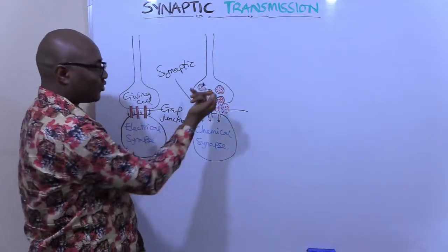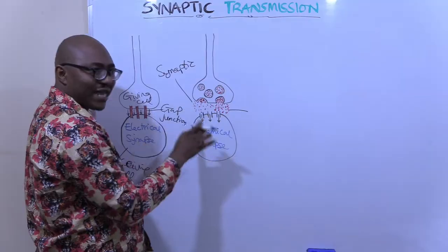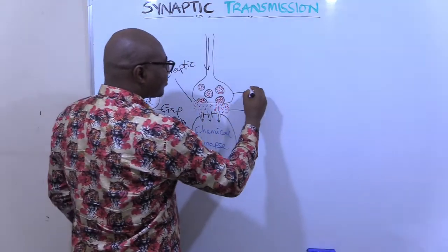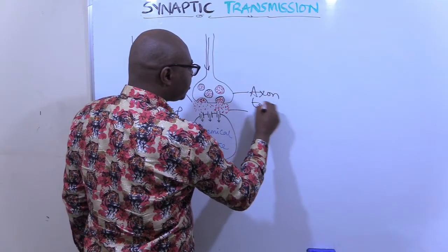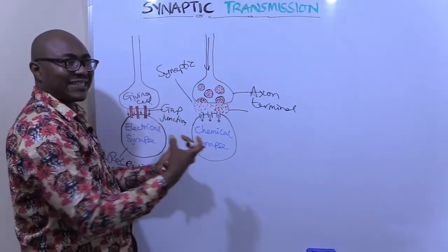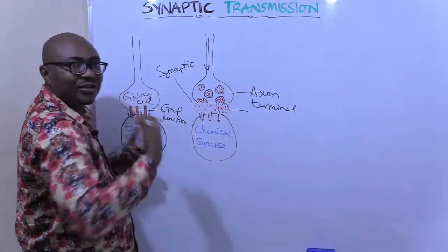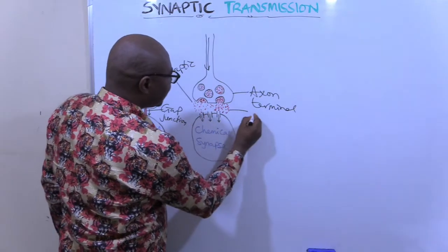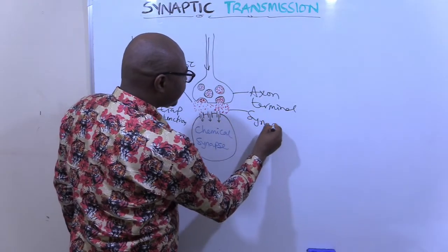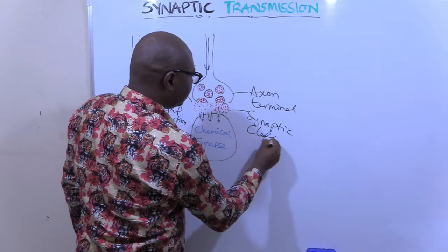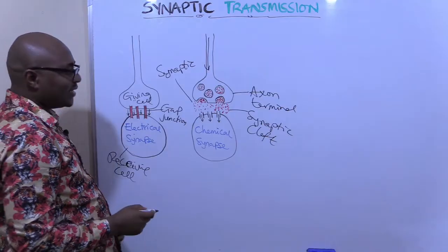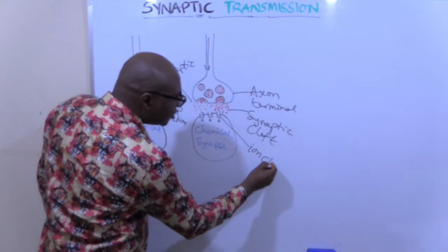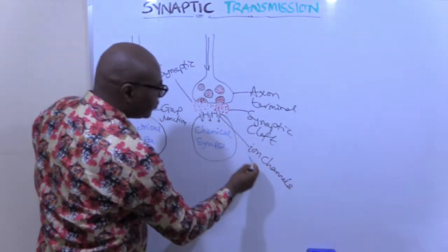We're going to talk about the mechanism of transfer from nerve to nerve. A nerve has an action potential flowing along it, reaching the axon terminal. It needs to transfer that action potential to another cell. Here you have what is known as the synaptic cleft — the space in between them — and the normal ion channels.